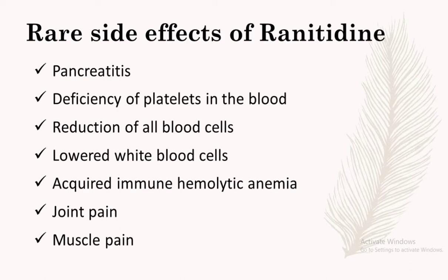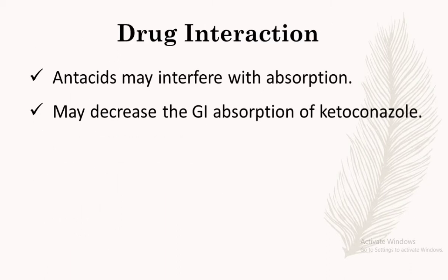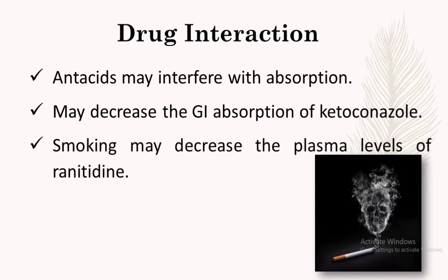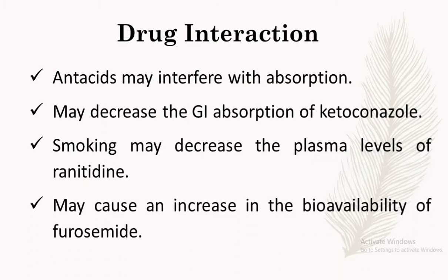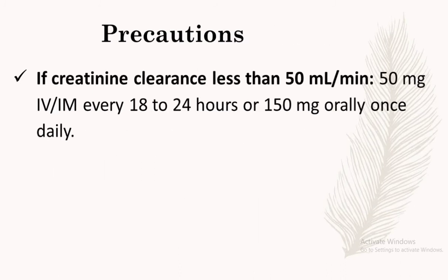Some drug interactions with ranitidine: antacids may interfere with the absorption of ranitidine because of the altered gastric environment. It may decrease the GI absorption of ketoconazole. Smoking may decrease the plasma level of ranitidine and may cause an increase in the bioavailability of furosemide.